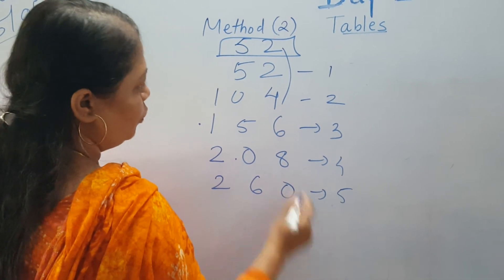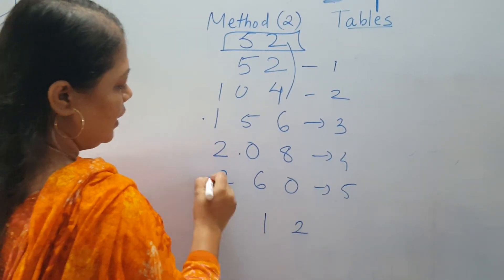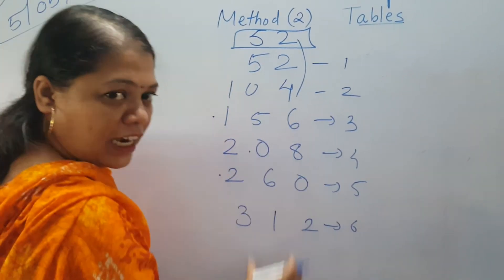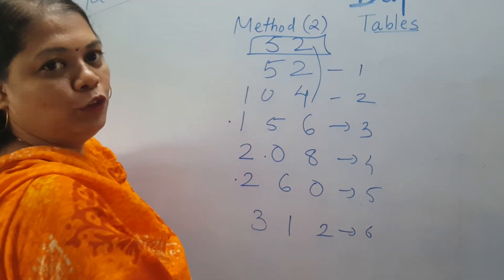2 plus 0 is 2. 5 plus 6 is 11. 2 and 1 is 3. This is the second method of the table. And the next step is to see the first step of the table, the second shift. What is the same way? By the end.